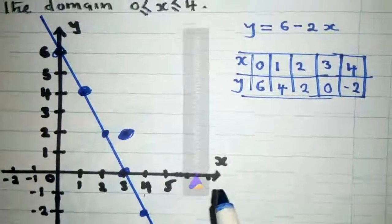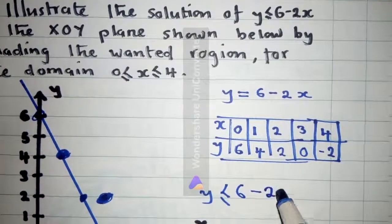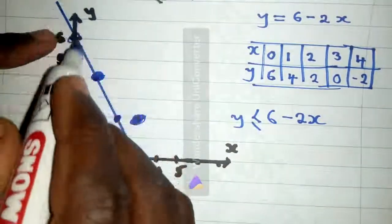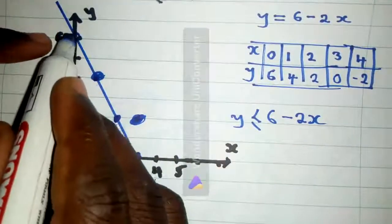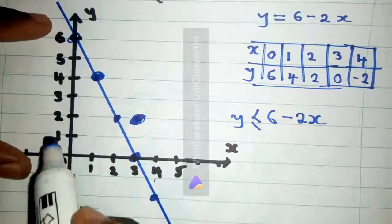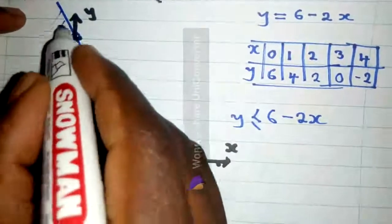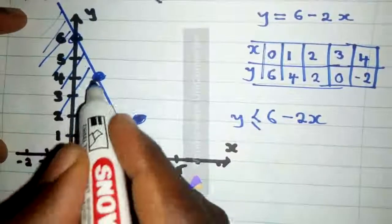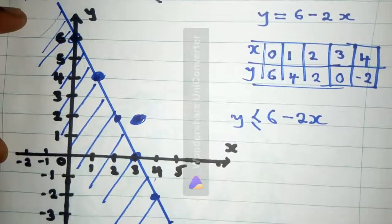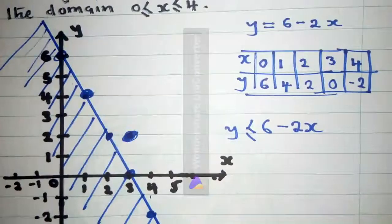Then you check the equation here. It says y is less than or equal to 6 minus 2x. So where is y? This is the y-axis. Greater is this side up, and then less is down somewhere here. So since we want to show the wanted region, it will be like this — where it's less or equal. So this is less or equal. This is how you answer this question.